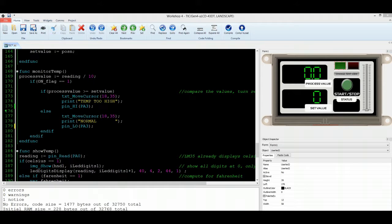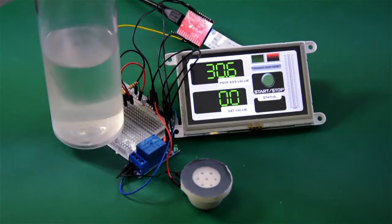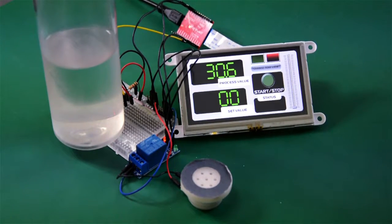Whenever the TIC is in stop mode, you can change the set value for the controller. For this demo, we are going to use a bottle of cold water to reduce the temperature.